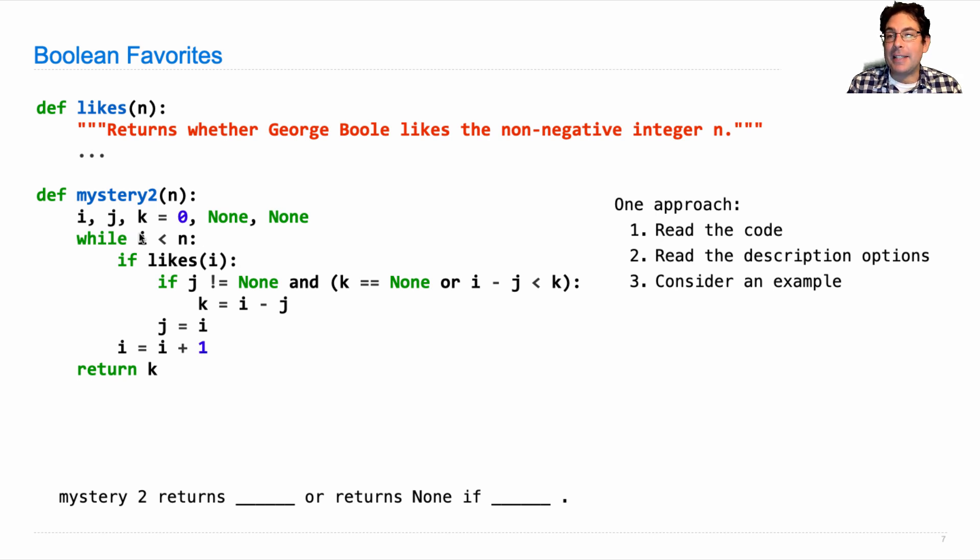So if n is eight it'll go zero, one, two, three, four, five, six, seven. And we'll check whether George likes each one of those. And then we'll do something in here that I'm not quite sure I understand yet.